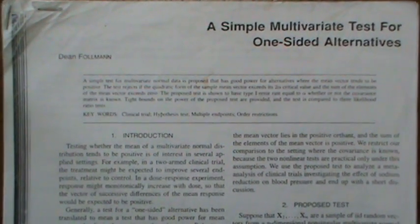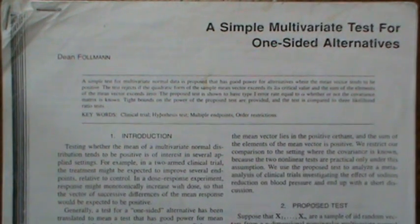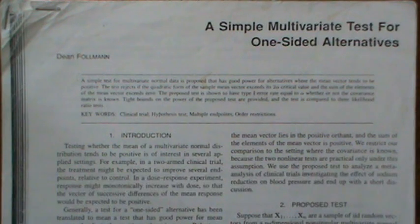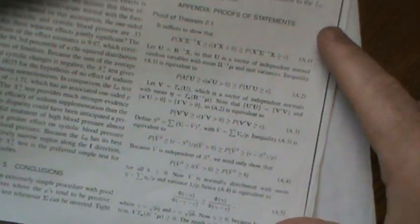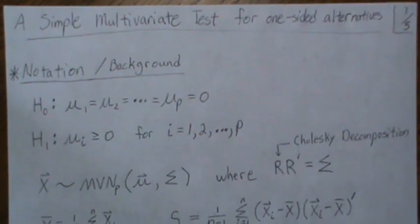In this video we're going to do something a little different than usual and review an article by Dean Fulman: 'A Simple Multivariate Test for One-Sided Alternatives.' The question is whether you want to test if a mean vector is zero, or whether the components tend to be positive — a one-sided test, sometimes called ordered alternatives. The main theorem is about 15 lines, and we want to go through that proof, which will take a couple of pages to fill in all the gaps.